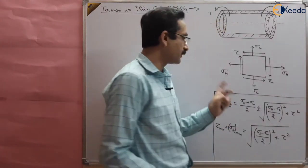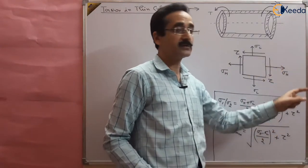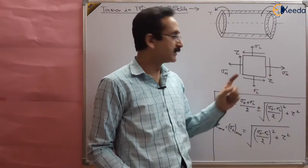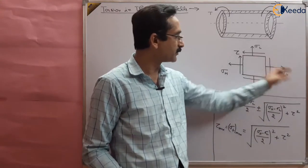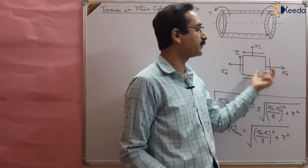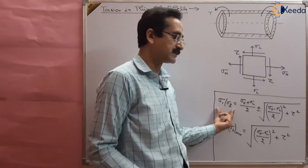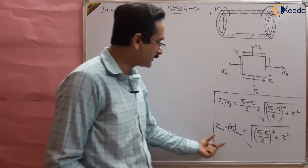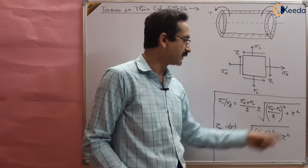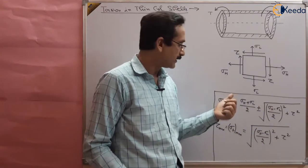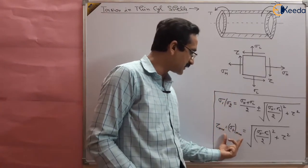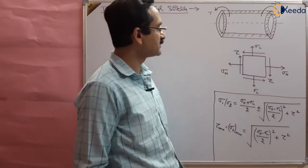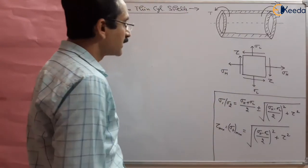The maximum shear stress tau_max is given by: tau_max = √[(sigma_h − sigma_l)/2)² + tau²]. We have already studied this in the principal stresses chapter. So now our design criteria will not be sigma_h alone as was the case with thin cylinders when there was no torsion. Because there is torsion here and shear stress is developed at the plane of sigma_h, the principal stresses act at a different plane, and the design is based on these formulas.